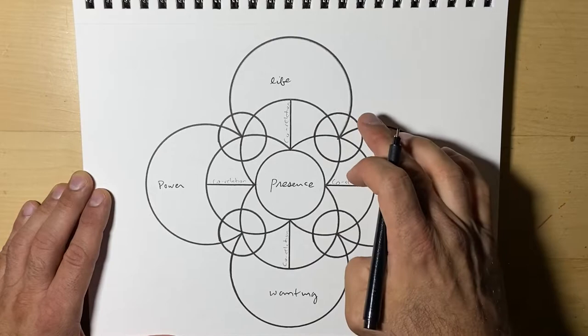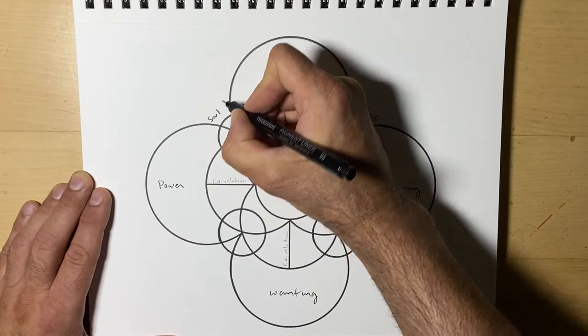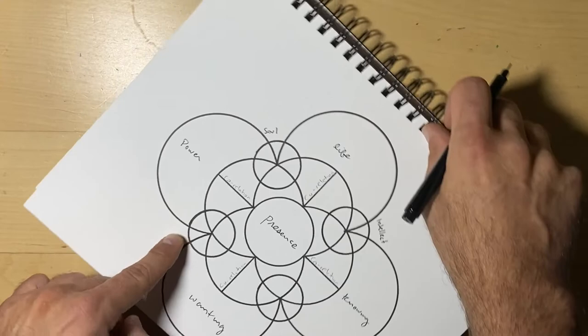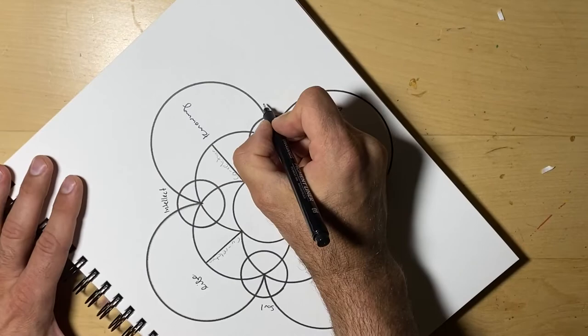Up in this corner here we have Intellect. On the left side we have Soul. On this corner here we have Particles, and on the other corner we have Nature.